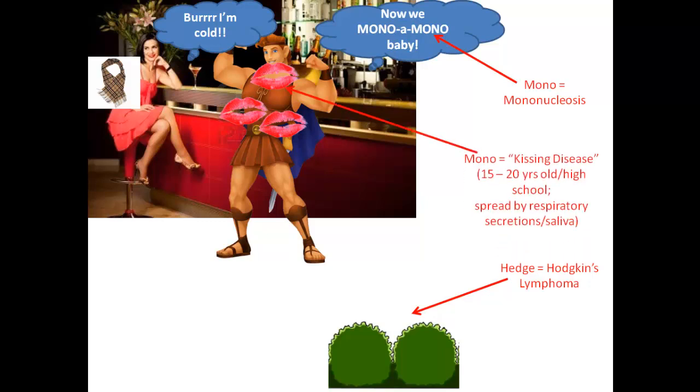He says, now we mono a mono baby. So of course she has to reward him — she plants a couple nice juicy suckers on him. The hedge sounds like Hodge, Hodgkin's lymphoma. Mono a mono — mononucleosis.